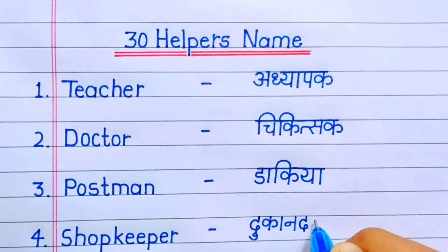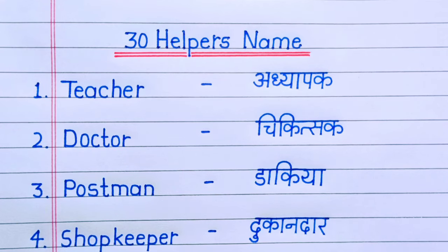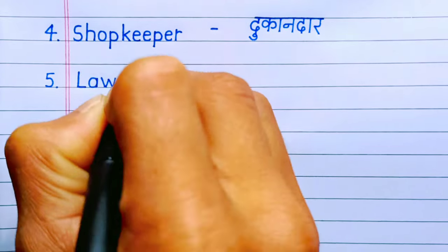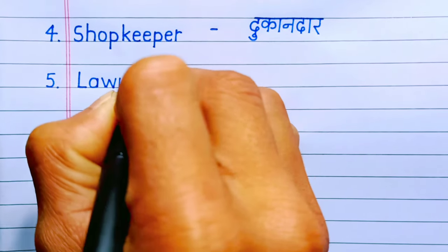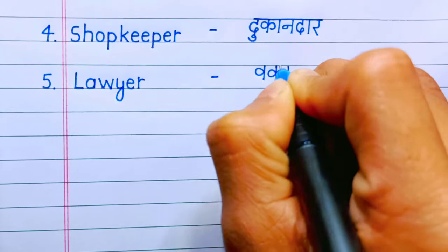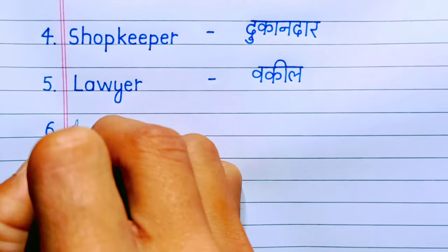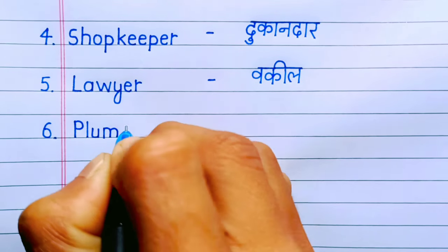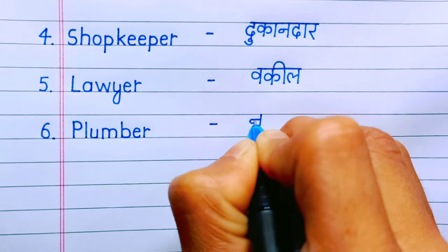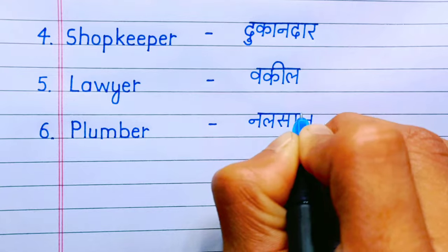Number four: shopkeeper. Shopkeeper means Dukandar. Number five: lawyer. Lawyer means Wakil. Number six: plumber. Plumber means Nalsaj.